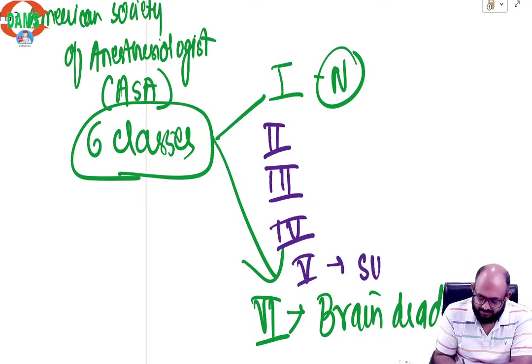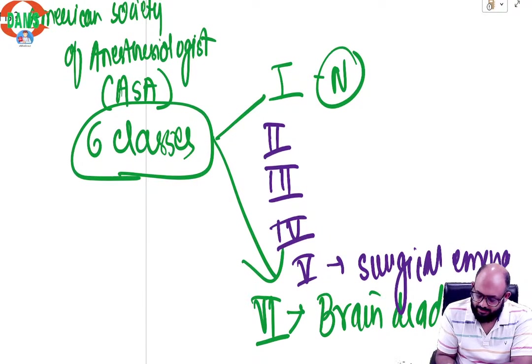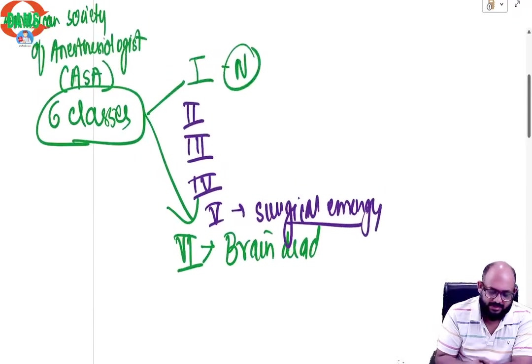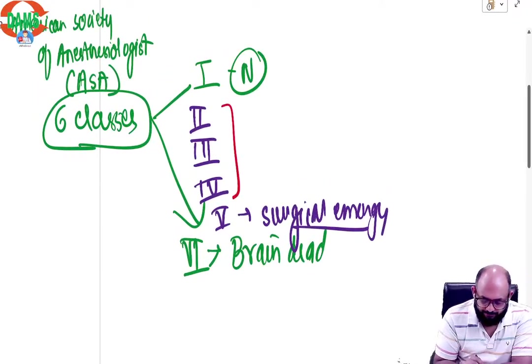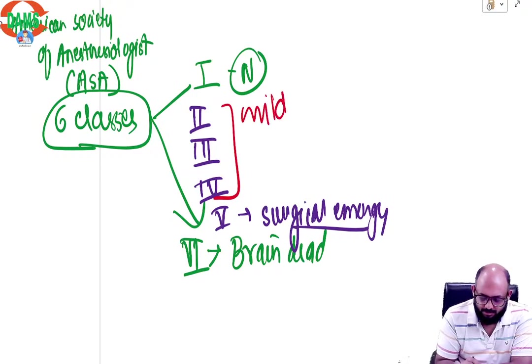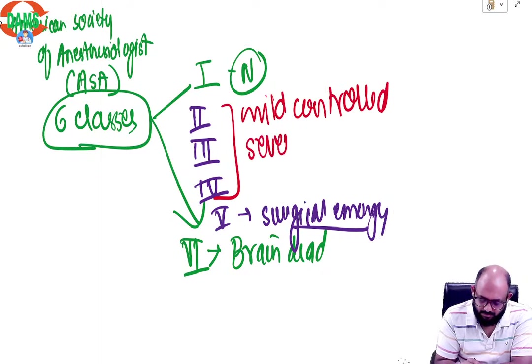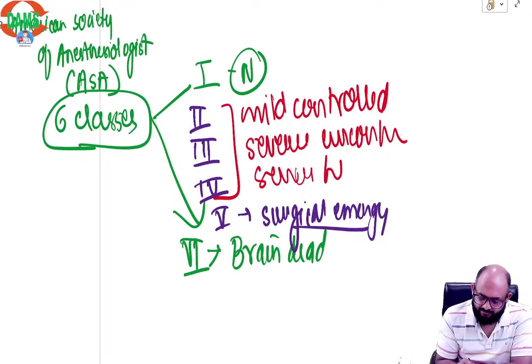We know two, three, four are increasing risk of medical problems. And five is a surgical emergency where the patient needs surgical care otherwise they will die. Two, three, four are increasing risk of medical problems. So mild controlled disease, severe uncontrolled, and severe life threatening.